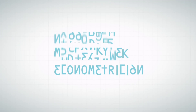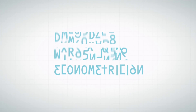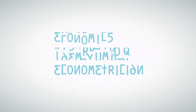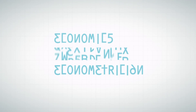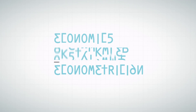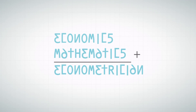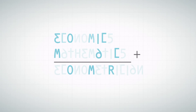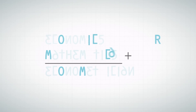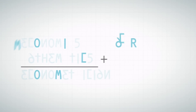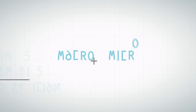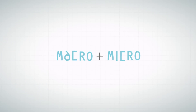An econometrician is someone who is interested in and knows about economic models, but he also knows his math. He likes to solve puzzles within the landscape of economic variables, both on a macro- and micro-economic level.